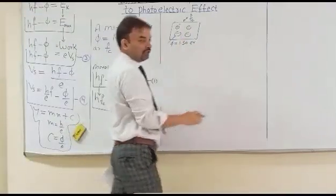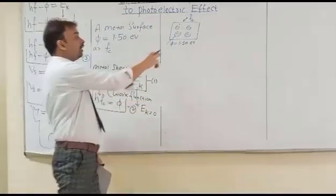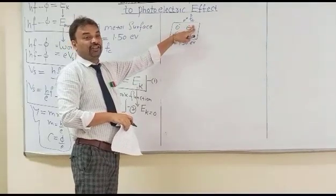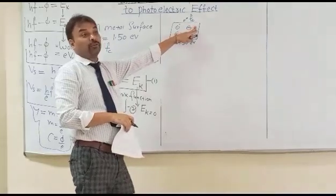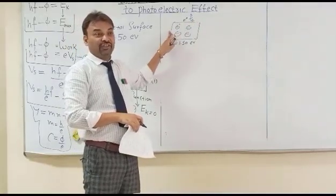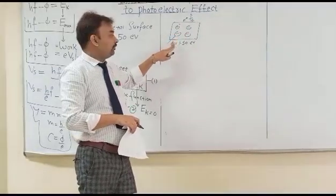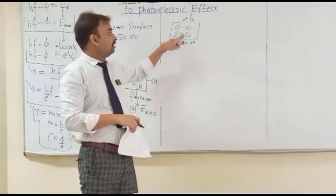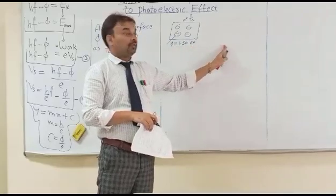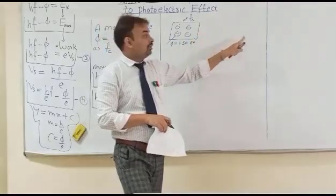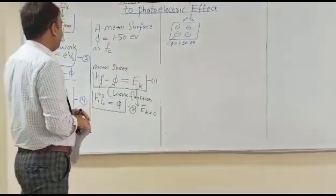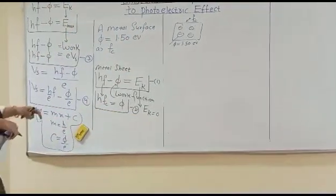The critical frequency is the minimum frequency needed to just eject the electron. Since the work function is different for different metals, the critical frequency fc will also be different. For example, a metal with work function φ = 2.50 eV needs a different fc, and a metal with φ = 4.50 eV needs yet another fc. So for this problem, we need to find fc for our given work function.